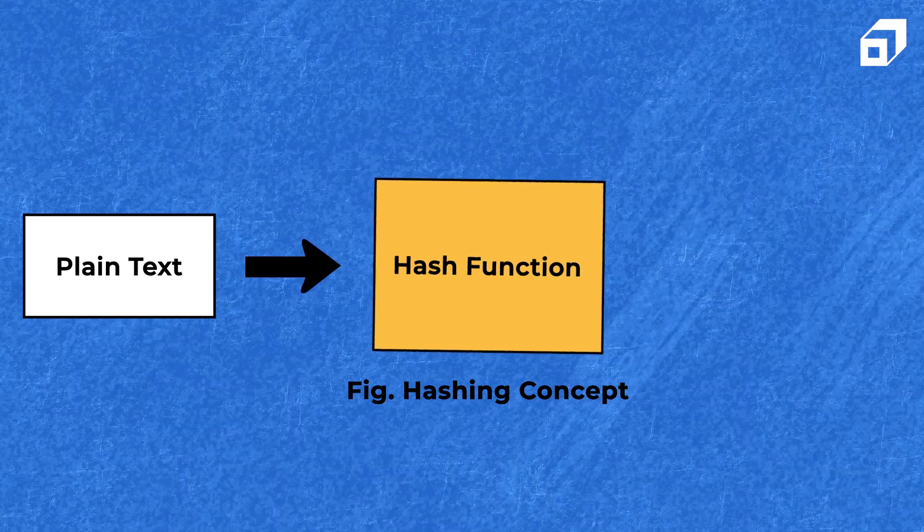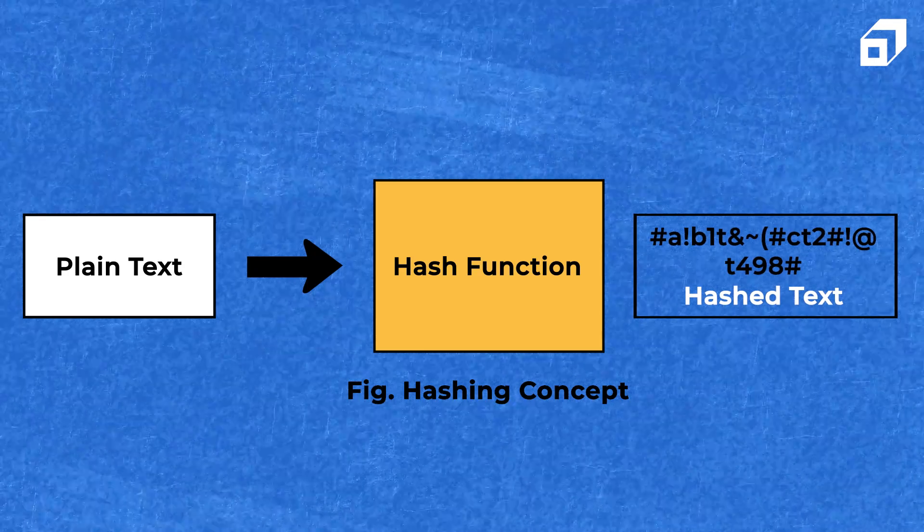The last important data structure and algorithm topic is hashing. You should understand the different types of hash functions and when to use each. Be aware of real-world applications of hashing like cryptography and distributed systems. You should also know different collision resolution techniques, such as linear chaining and bucketing, to become strong in this concept.